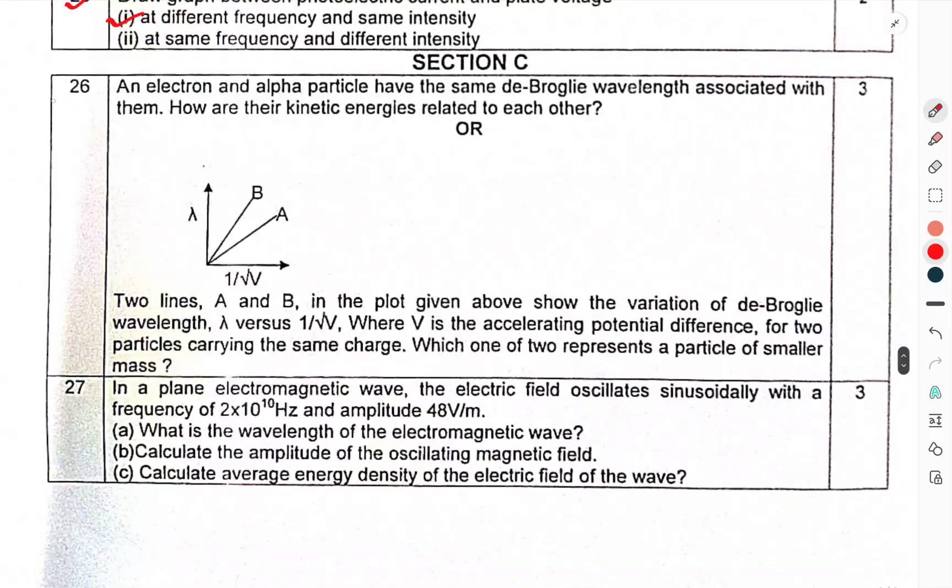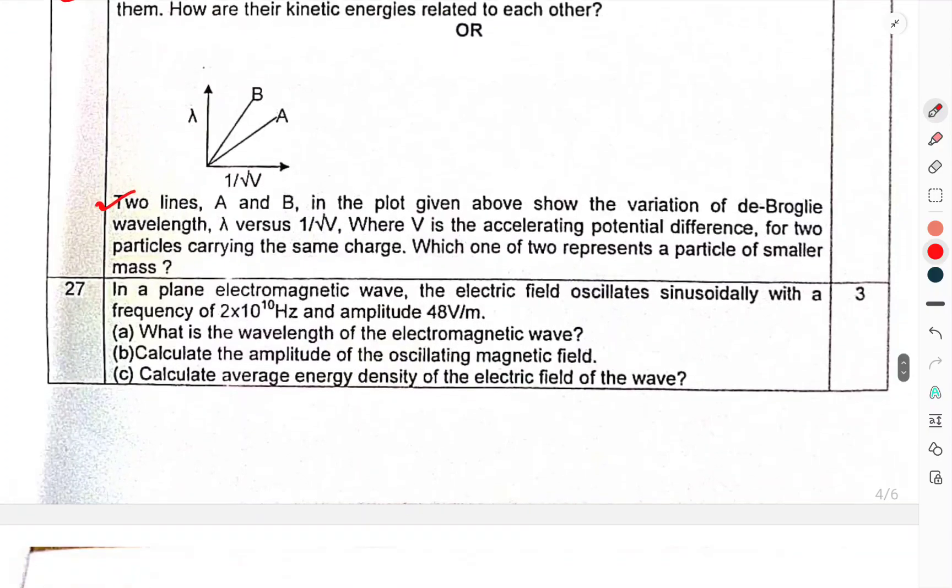Now we have come to section C. Question 26: An electron and alpha particle both have the same de Broglie wavelength associated with them. How are the kinetic energies related to each other? Or, two lines A and B in the plot given above show the variation of de Broglie wavelength lambda versus 1 by root V, where V is the accelerating potential difference for particles carrying the same charge. Which one of the two represents a particle of smaller mass?